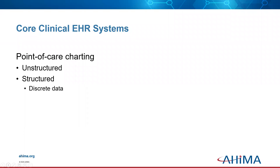In point-of-care charting, information is entered into the health record at the time and location of the service. The outcome of point-of-care charting can be structured or unstructured data. Because structured data entry fields are controlled, defined, and limited, it results in discrete data. Discrete data represents separate and distinct values or observations — in other words, data that contains only finite numbers and has only specified values.